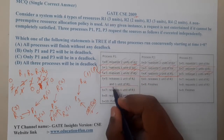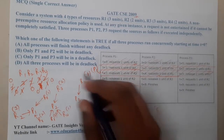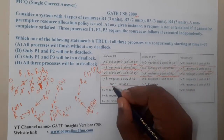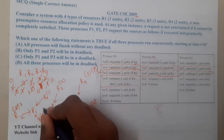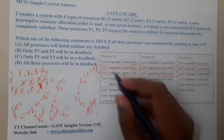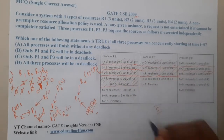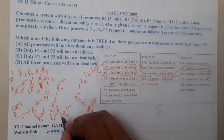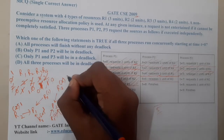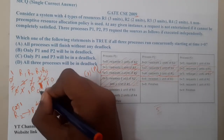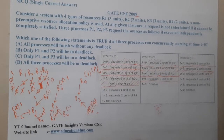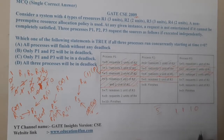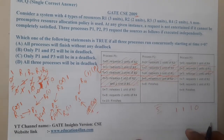Still at t5, P1 releases 1 unit of R2 (R2 becomes 1) and 1 unit of R1 (R1 becomes 1). At time t6, P2 releases 1 unit of R3 (R3 becomes 1). So the current available resources are: R1=1, R2=1, R3=1, R4=0.